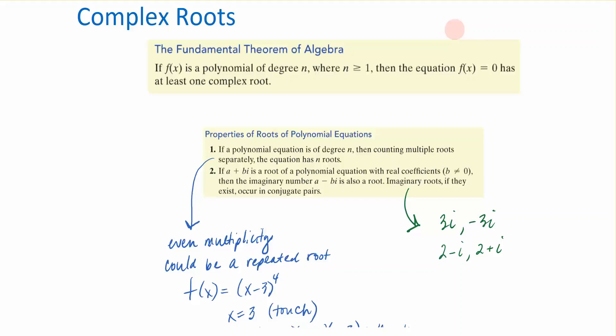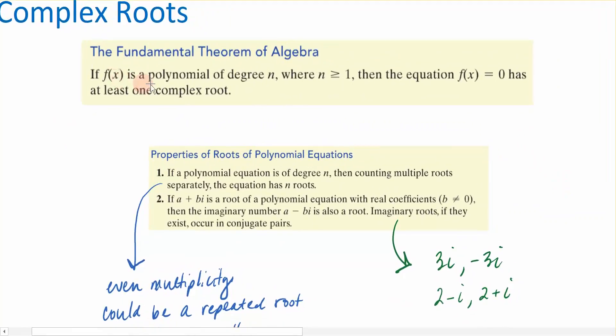We've talked already about how to find the real roots of a polynomial function, and it's time for us to discuss complex roots. We want to look at this fundamental theorem of algebra. It says that if I have a polynomial of degree n, then the equation has at least one complex root, which is what we're going to investigate right now.